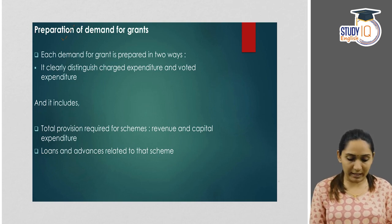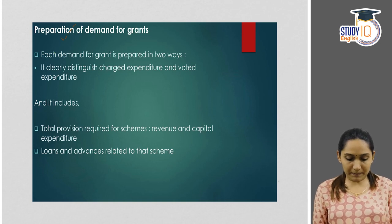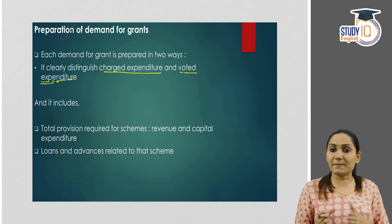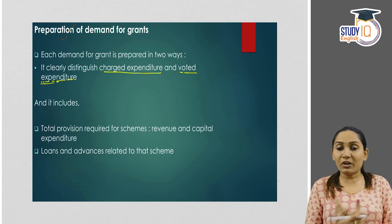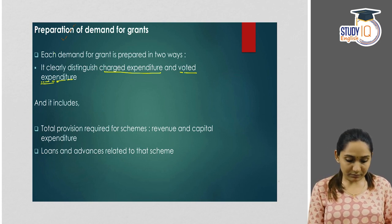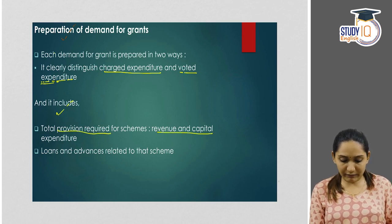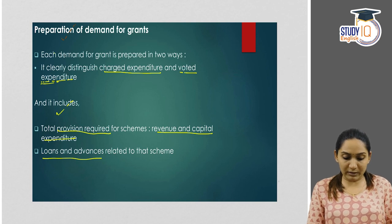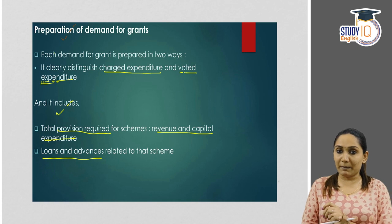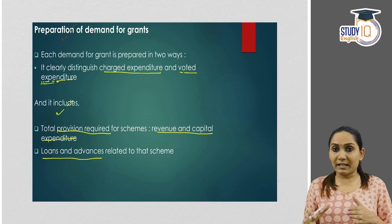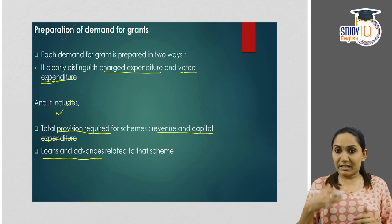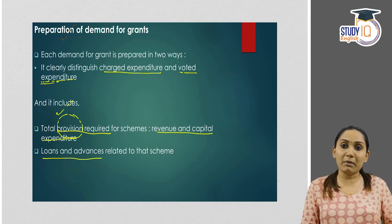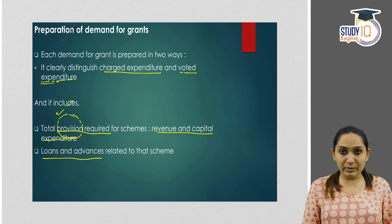Coming to the preparation of demand for grants — each demand for grant is prepared in two ways. It clearly distinguishes charged expenditure and voted expenditure, since charged expenditure does not require parliament's approval. It also includes the total provision required for the schemes, both revenue and capital expenditure, as well as any loans and advances related to the scheme. If any money needs to be borrowed for implementing the scheme, that also needs to be mentioned.